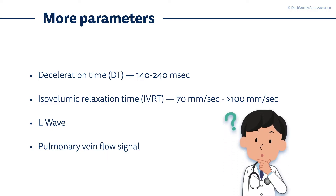Overall, there are some more parameters you can distinguish or measure. The deceleration time is in the range of 140 to 240 milliseconds. Another thing you can measure is the isovolumic relaxation time, the IVRT, which is in the range of 70 milliseconds. Keep in mind that this is a rather difficult measurement, but you can try it and stick to those norm values.